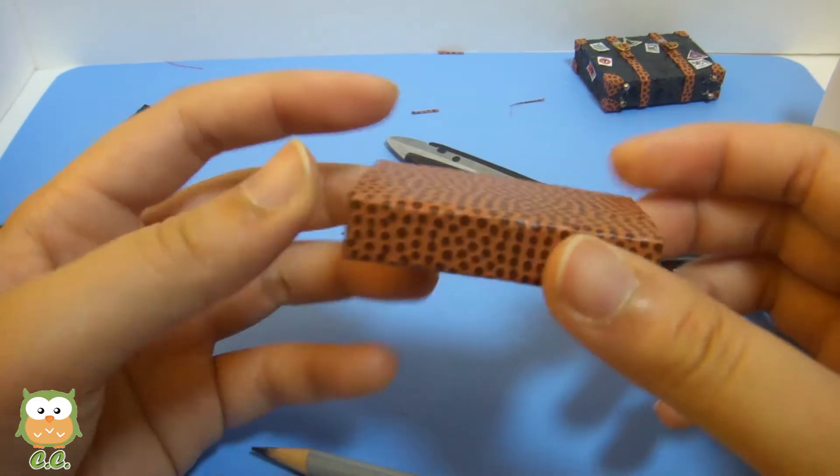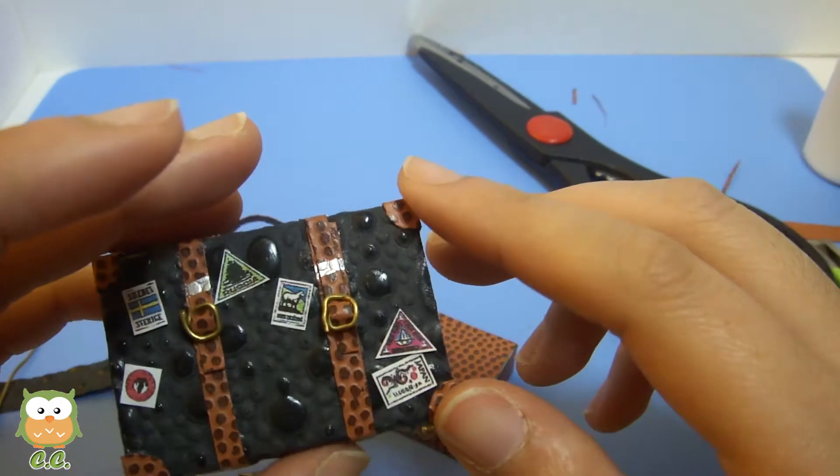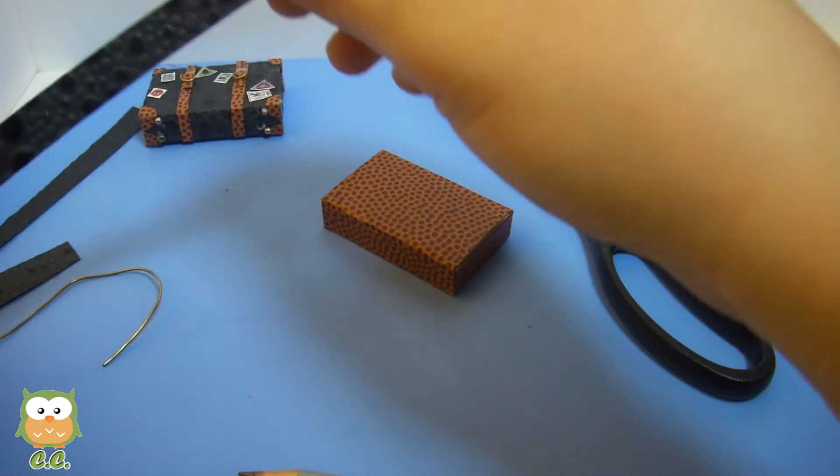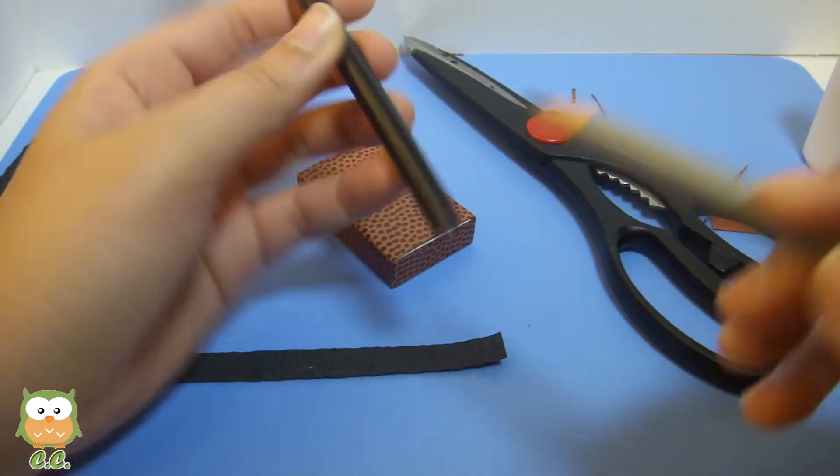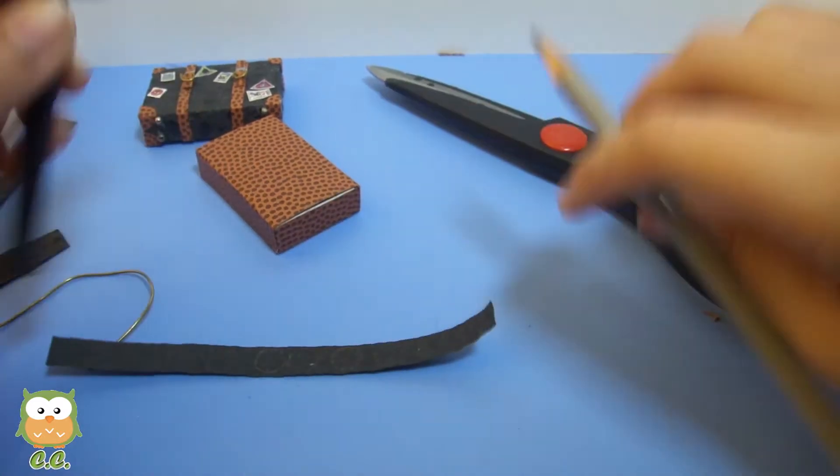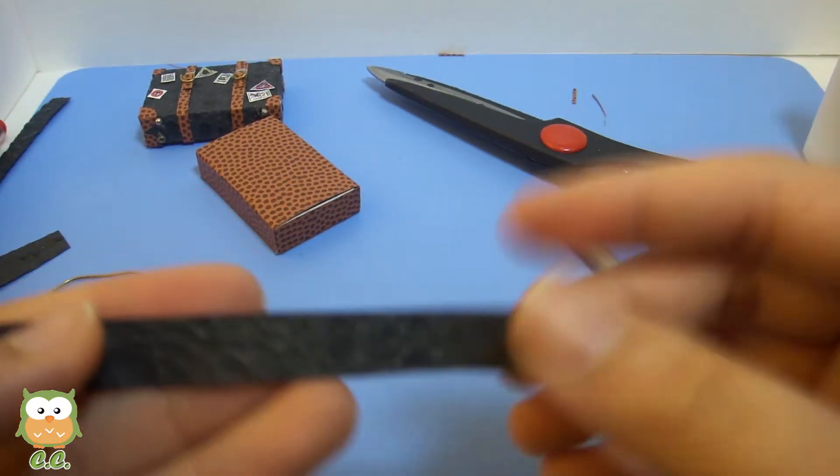So now you have the box and you're gonna make these corners now. You need six circles. So what I'm gonna do is use this one. Draw six circles at the back of the paper. Okay, so there are six circles here. I'm gonna cut it out now.